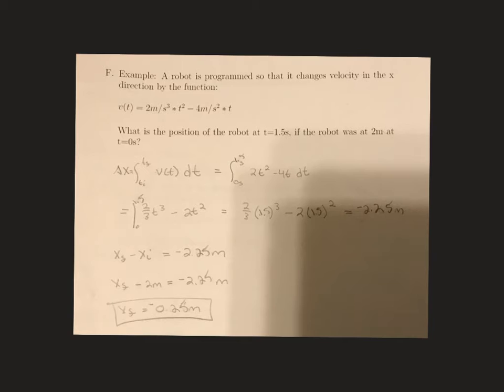So now I've integrated. Our integral is going to be 2 thirds t cubed minus 2 times t squared, and we're going to evaluate from 0 seconds to 1.5 seconds.